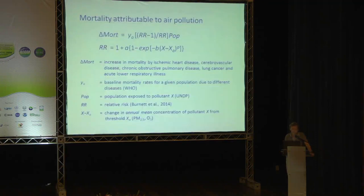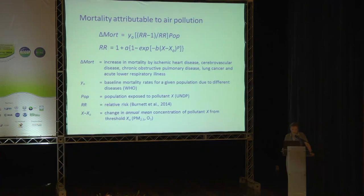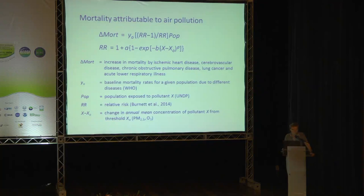We link model output to functions — a bit like calculating radiative forcing. You take formulas developed in other disciplines and apply them to the data you generate from measurements or models. Mortality is calculated by multiplying baseline mortality rates for a given population due to different diseases: ischemic heart disease causing heart attacks, cerebrovascular disease causing stroke, chronic obstructive pulmonary disease, lung cancer, and acute lower respiratory illness — mostly relevant for infants in areas where malnutrition is an issue.